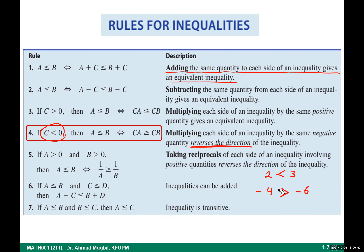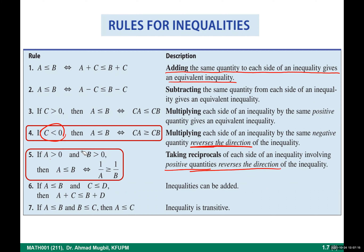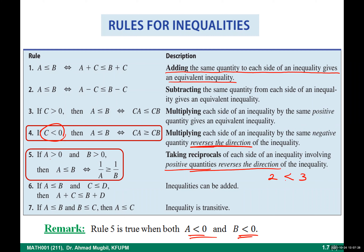Rule four: if a less than b, this is equivalent to 1/a greater than 1/b — meaning when you take the reciprocal of each side of an inequality, this reverses the direction. The condition here is that both a and b are positive. For example: 2 is less than 3. Take the reciprocal: 1/2 is greater than 1/3, not less than.